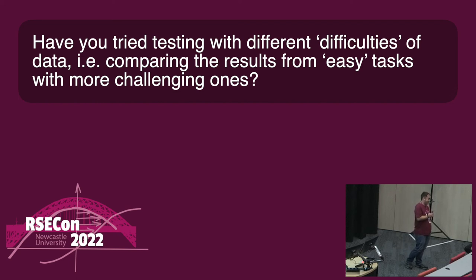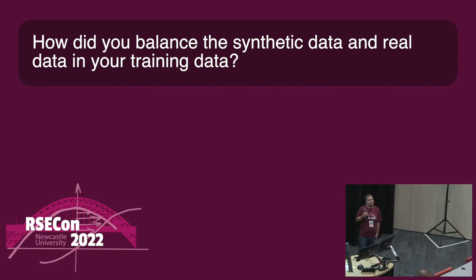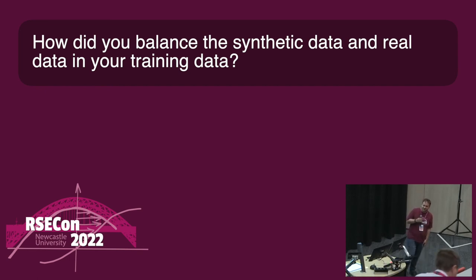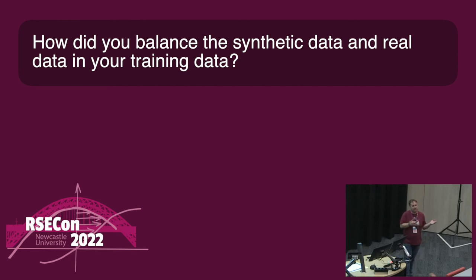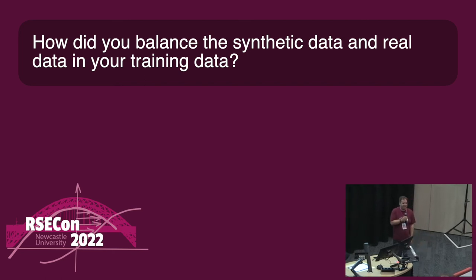An audience member suggested using easier or graduated data complexity at the start of training. The speaker agreed it was a good idea but confirmed they hadn't tried that yet. On the question of how variables were aligned with real data: the short answer is they weren't — variables were completely randomized, though they were hoping to obtain passenger behavior data to weight those variables and produce more realistic distributions.